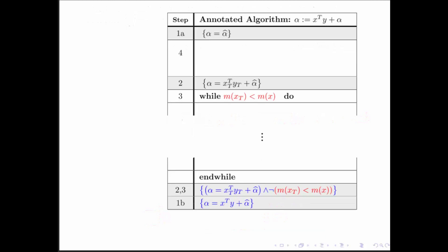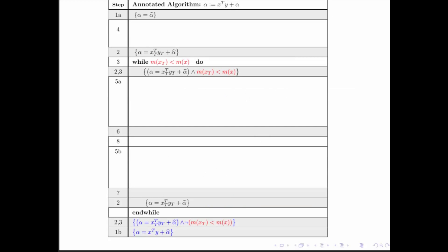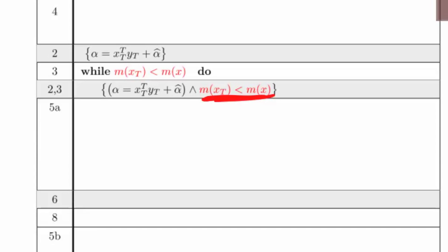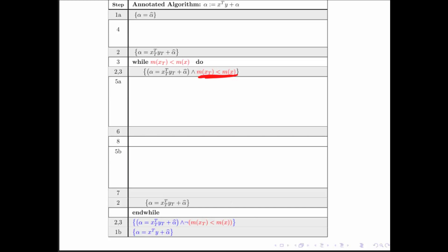We fill that into the worksheet, and notice that the loop guard is true when we're inside the loop — after all, we got back into the loop — and it's false when we come out of the loop.